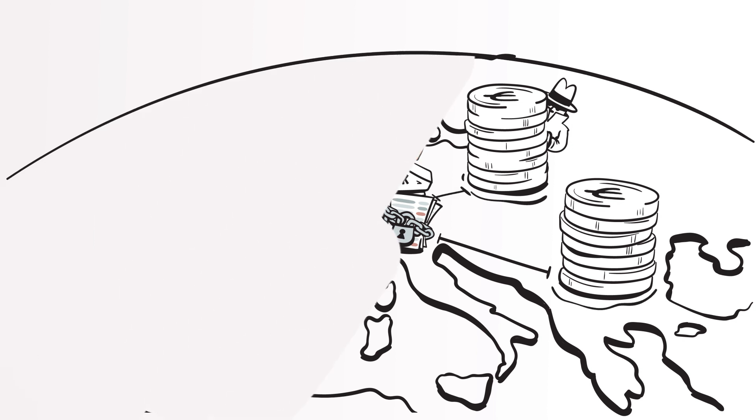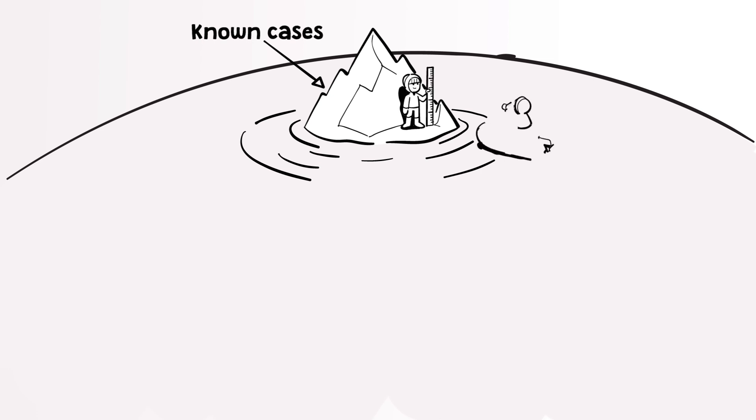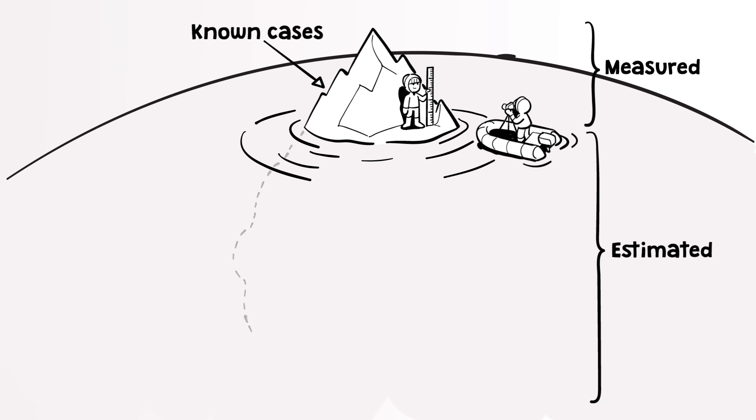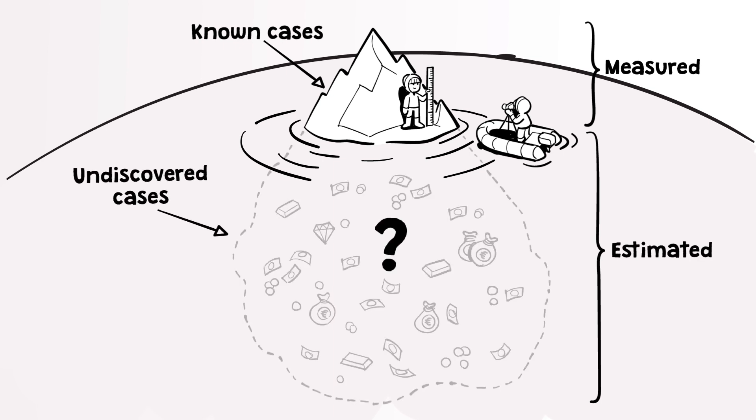This gives us a chance to estimate the size of the iceberg instead of keep staring at only the tip of the iceberg, which would happen when focusing only on the known cases. We need to focus on the known cases to understand how criminals behave, but we also need estimation models to get an idea of how big the problem is and how much we are missing.